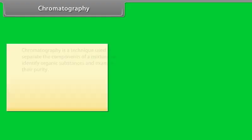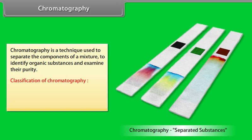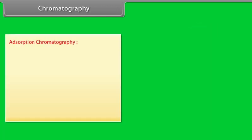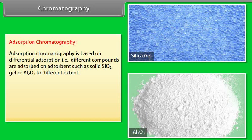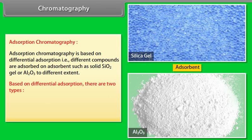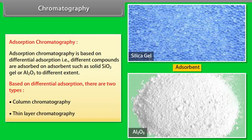Chromatography is a technique used to separate the components of a mixture, to identify organic substances, and examine their purity. Classification of chromatography: adsorption chromatography and partition chromatography. Adsorption chromatography is based on differential adsorption — different compounds are adsorbed on an adsorbent such as silica gel (SiO₂) or Al₂O₃ to different extents. Based on differential adsorption, there are two types: column chromatography and thin layer chromatography.